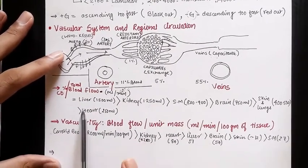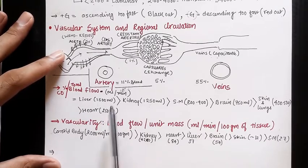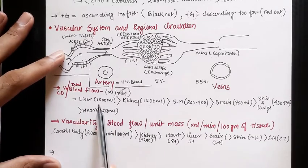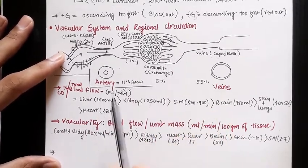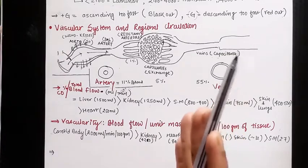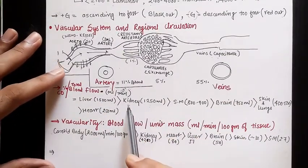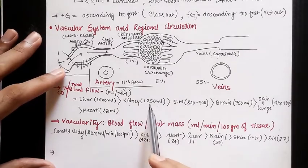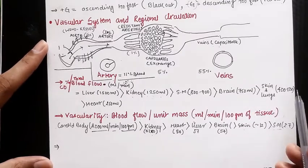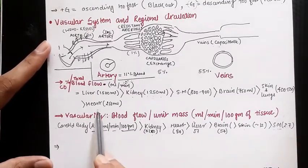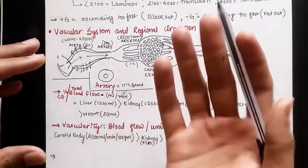Cardiac output distribution: the maximum blood flow goes to the liver at 1500 ml per minute, followed by kidneys at 1250 ml per minute, then skeletal muscles, then the brain, then skin, and finally the heart receives 250 ml per minute.